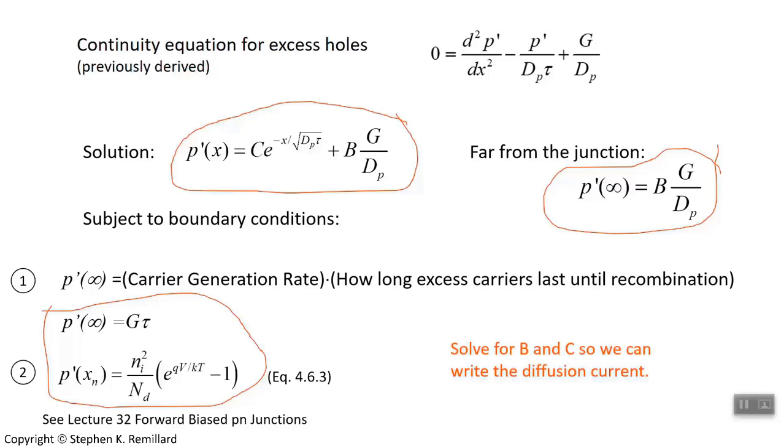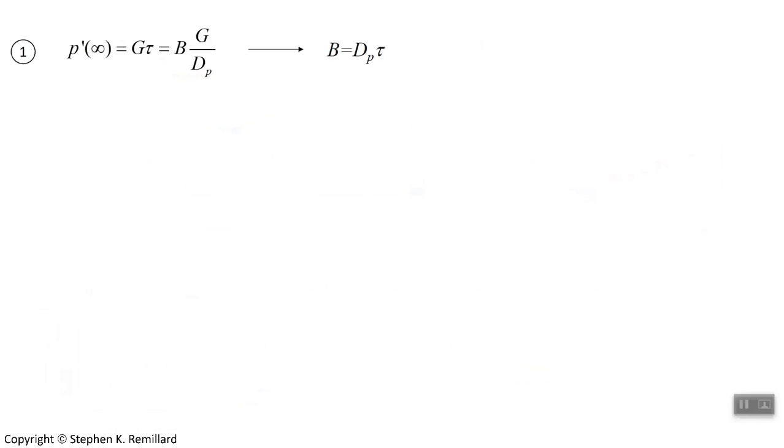So let's start with the first boundary condition. Rearrange it. So the first boundary condition was at infinity, the excess hole density is g tau. Now, but we had already figured out that p prime at infinity is b times g over d. That's why I made a little issue about it just now. So those have to be the same thing. That means you know what b is. It's just diffusion coefficient times the recombination time. Let's look at the second boundary condition.